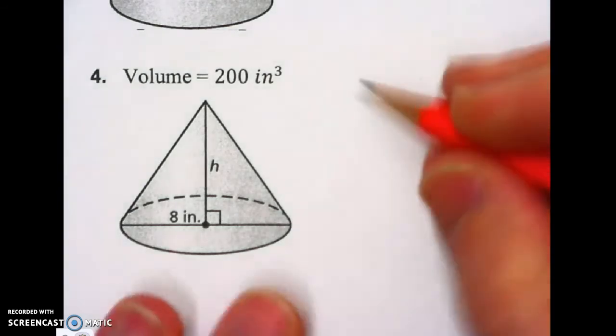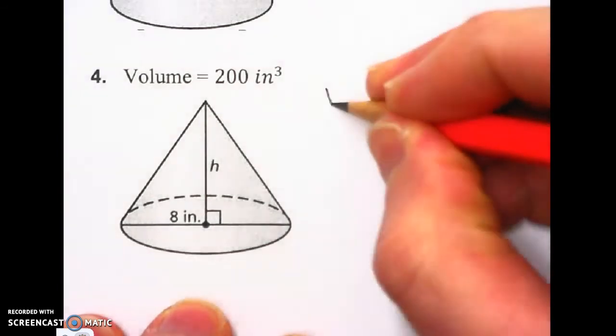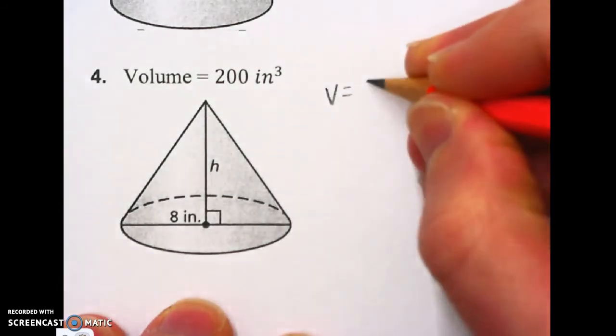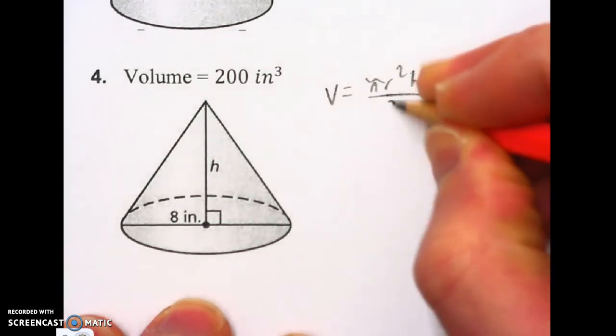First thing I'm going to do is write the volume formula for a cone. So V equals pi R squared times H divided by three.